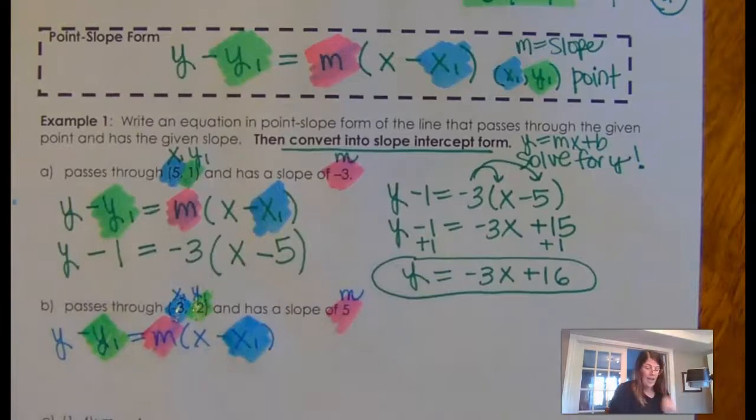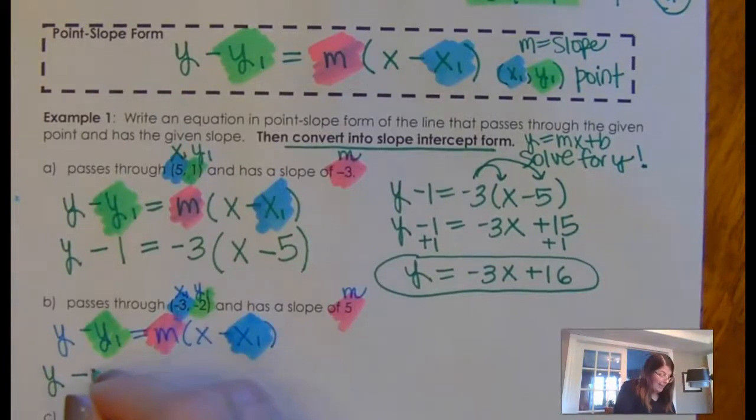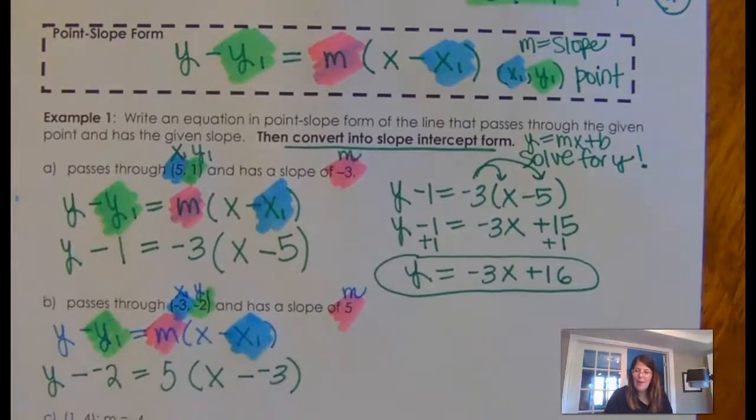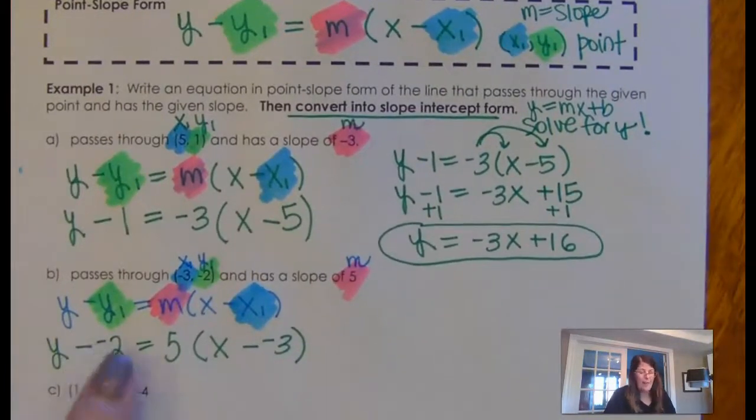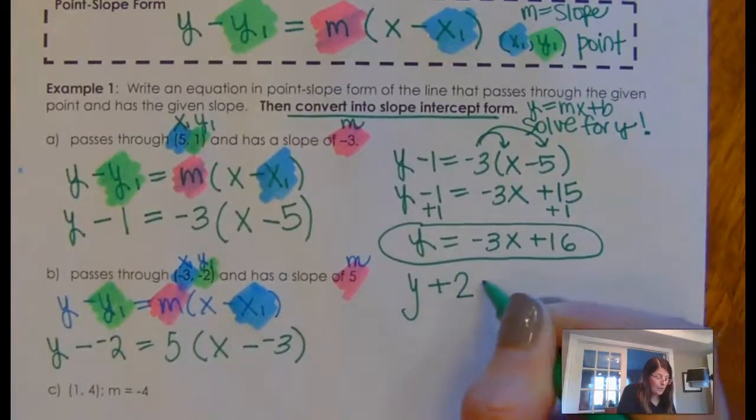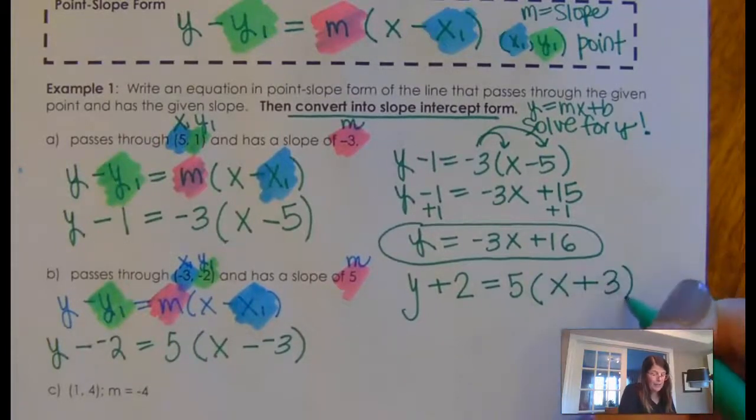Okay, and so all I'm doing is plugging that stuff in. So it is Y minus, what's in the Y spot? Negative 2 is equal to 5X minus negative 3. Now, if I'm writing this in point slope form, you guys, do I write minus negative? What does minus negative mean? It means plus. So I've got Y plus 2 is equal to 5 times X plus 3.